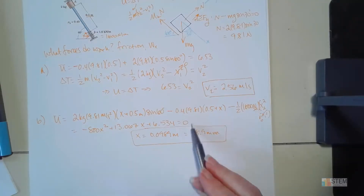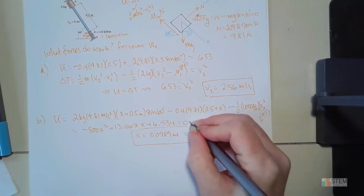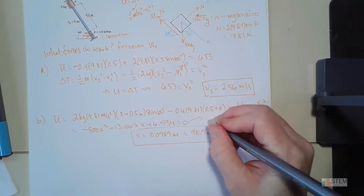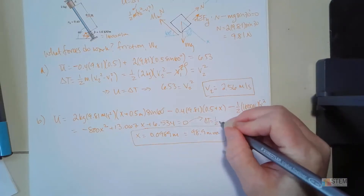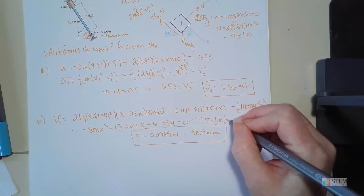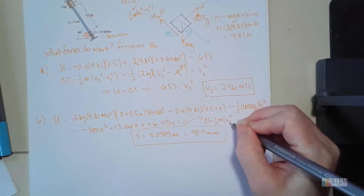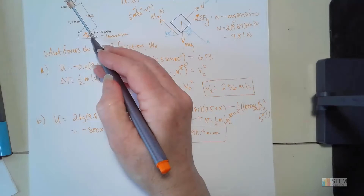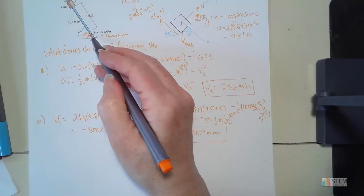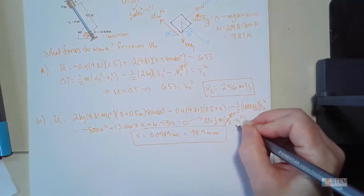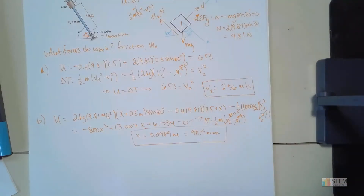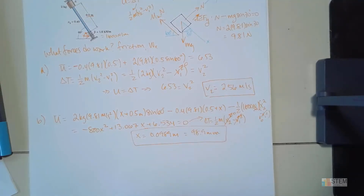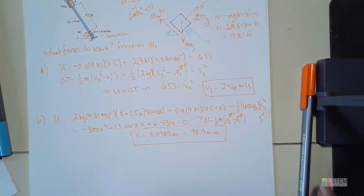I forgot to mention why delta T equals zero. Delta T is one-half m times (V2 squared minus V1 squared). This time V2 is zero because we're going down until the collar stops, and V1 is also zero because we started at rest at A. So both velocities are zero and delta T equals zero. I kind of skipped over that part earlier, but that's your answer for that one.